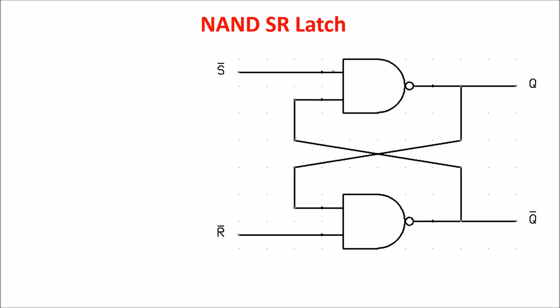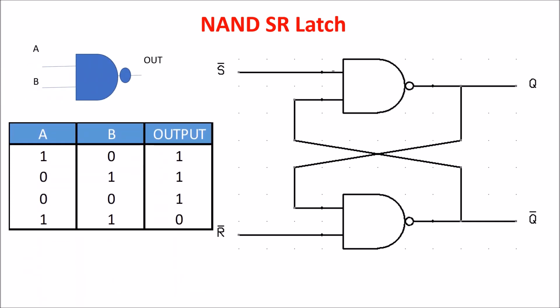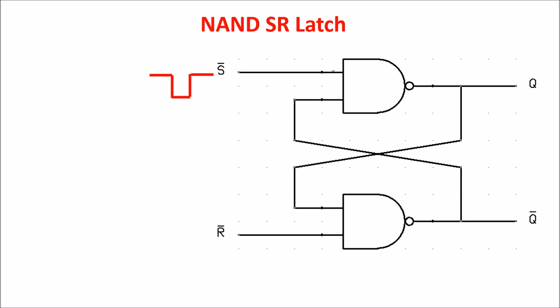First we remember the truth table of the NAND gate, which is this. The output is zero only when both inputs are ones. Then we see the bar upon set and reset inputs. That's because usually we keep the inputs in the high state and we give some zero pulses to change the state of the circuit.